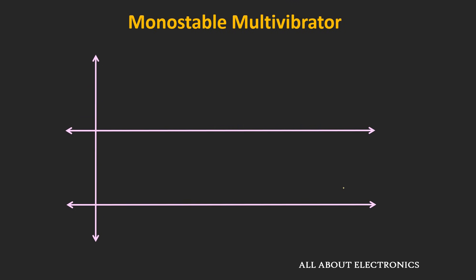Then the second type of multivibrator is the monostable multivibrator, and it is also known as the one-shot multivibrator. In monostable multivibrator, there is one stable state and one unstable state.